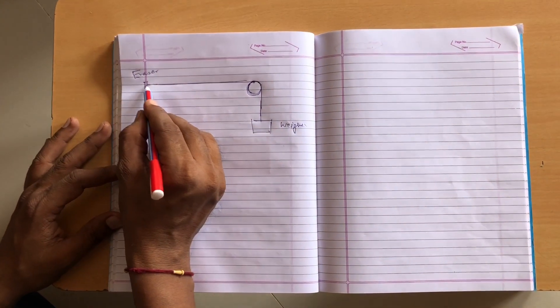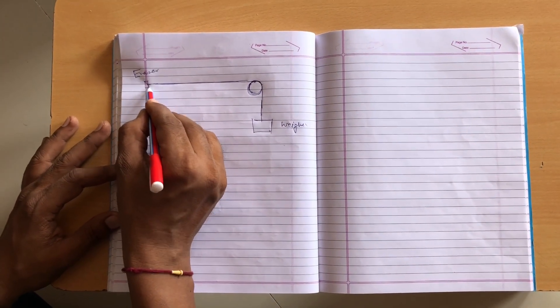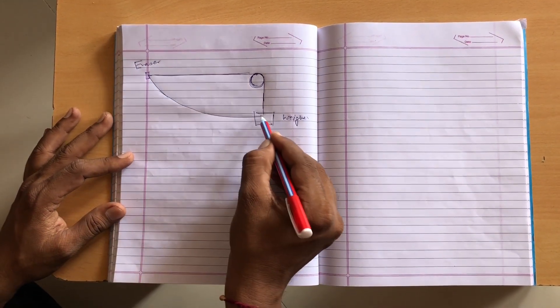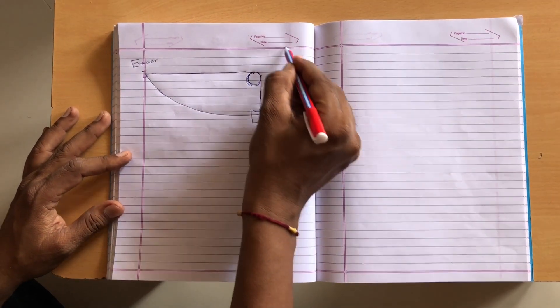When we release eraser, the trajectory, the path of motion is like that - spiral.